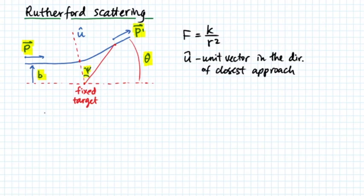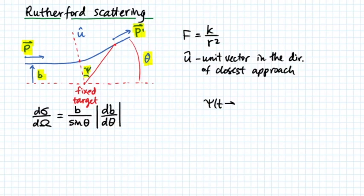Our job is to find differential cross-section dσ/dΩ, which we previously found to be b divided by sine theta times db dθ. We need to express theta in terms of angle psi. Let's define angle psi at times after the collision to be equal to psi naught. Then we can see that 2 times angle psi naught plus angle theta should add up to 180 degrees. Thus, we can write that angle psi naught is related to theta as π/2 minus θ/2.